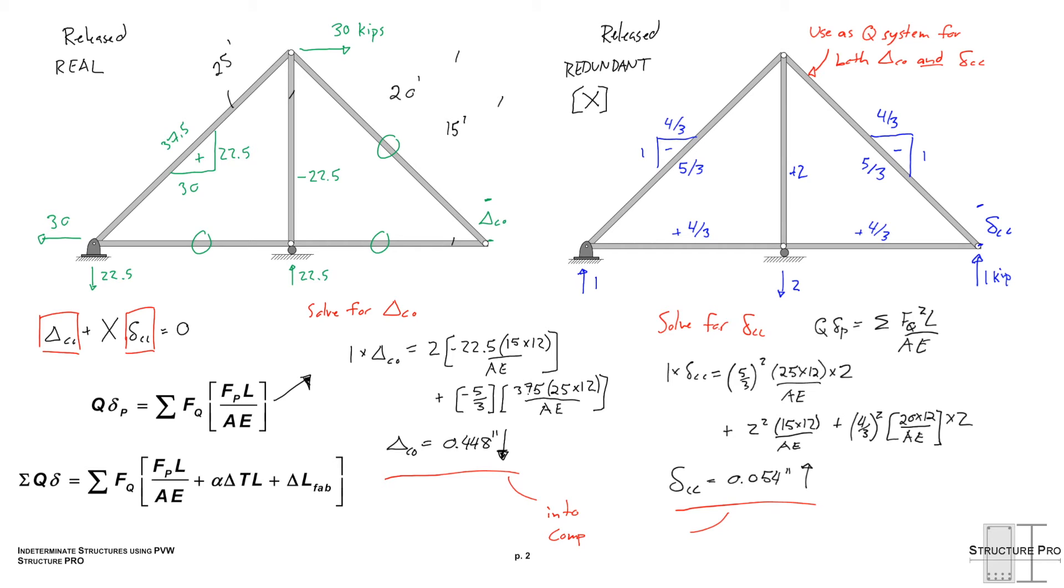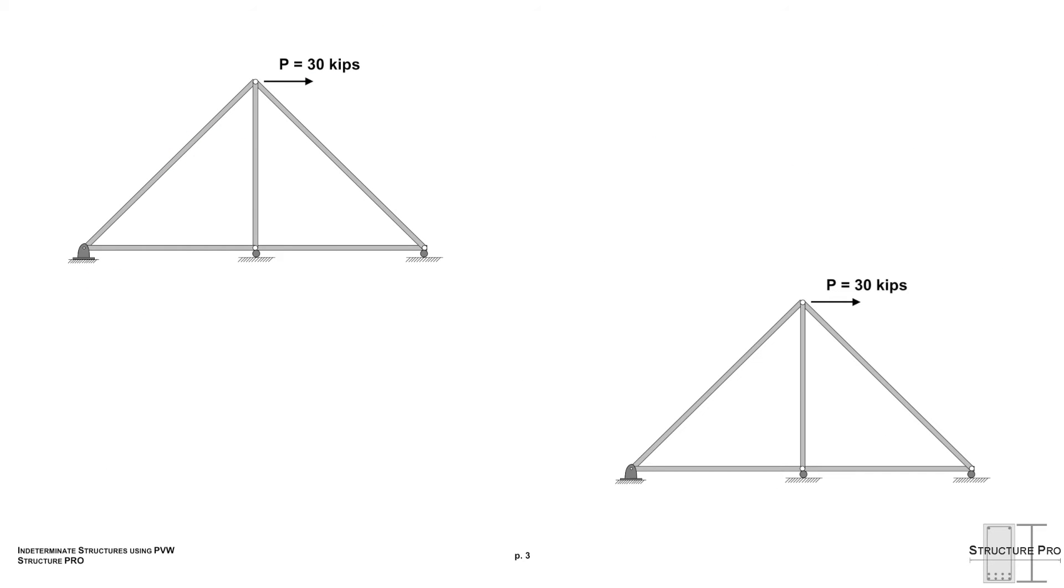So we'll do that just on the next screen here. So from our initial steps like we said literally all that's left is to plug in those two values we solved for into our compatibility equation to get x. So we have delta C0 and delta Cc. So the equation looks like this. Negative 0.448 inches plus x times 0.054 inches equals zero. x is actually our reaction at C which comes out to be 8.3 kips.